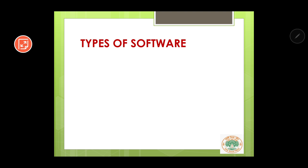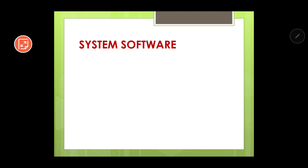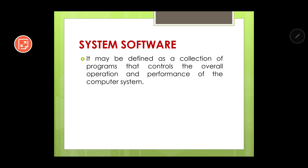Now let us see the types of software. Software can basically be categorized into two categories: the first is system software and the second is application software. Let us begin with system software. An operating system may be defined as a collection of programs that controls the overall operation and performance of the computer system.